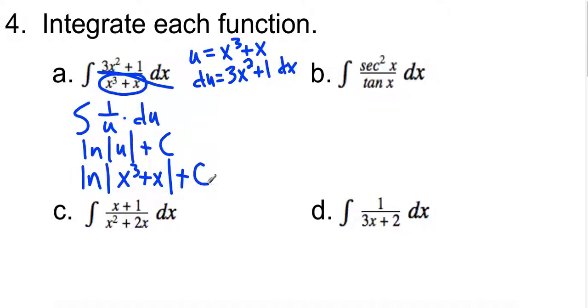All right, let's check out the next one. Again, when I look at this, I see that tangent x, the derivative of tangent is secant squared. So if I pick this for my u, that's going to take care of that secant squared.